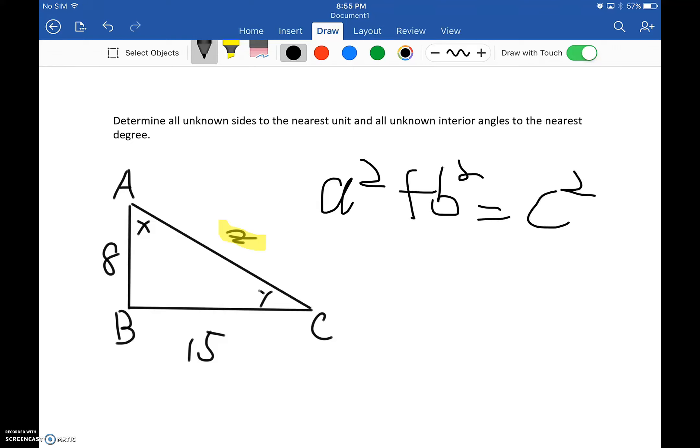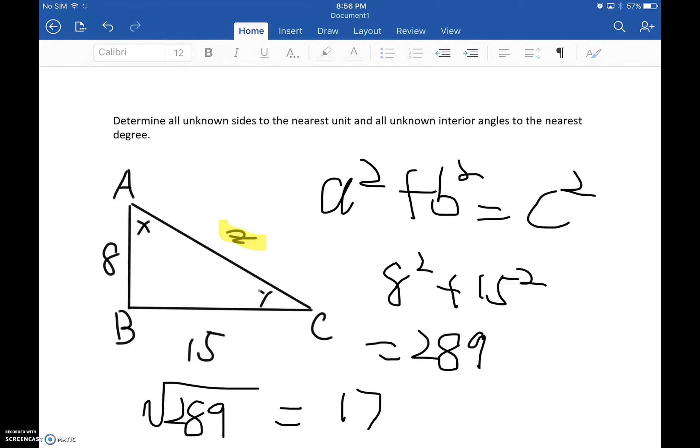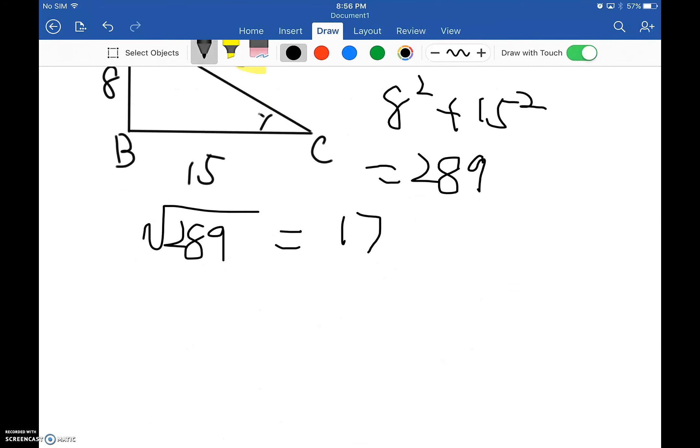First, because we need to find out what z is. So we put 8 squared plus 15 squared, which is, let me get my calculator right, it is 289. So, square root of 289 is 17. Alright, so now we have done the z is 17.